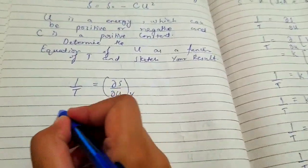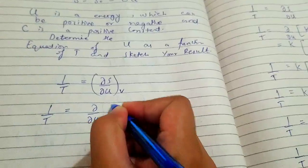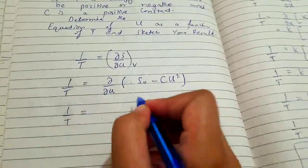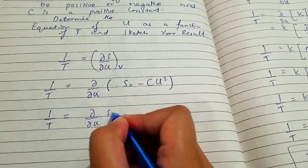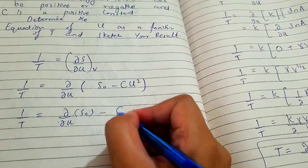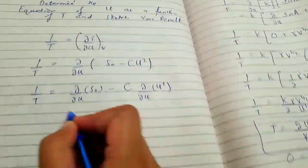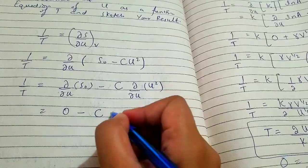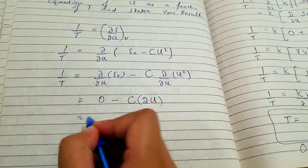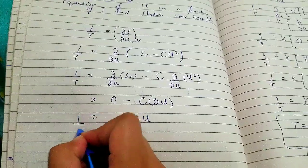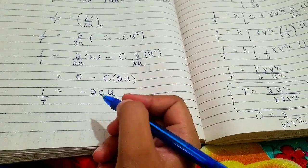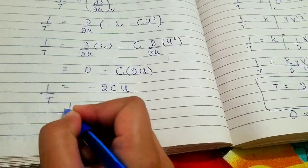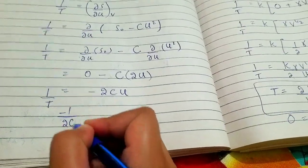We compute the partial derivative of S with respect to U, where S is given by S₀ minus cU². So 1/T equals the partial derivative with respect to U of (S₀ minus cU²). The constant S₀ term gives 0. Taking the derivative of cU² gives 2U, so 1/T equals minus 2cU. Solving for U, we get U equals minus 1 over (2cT).